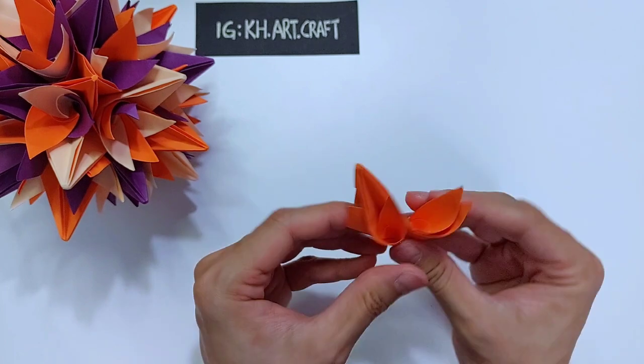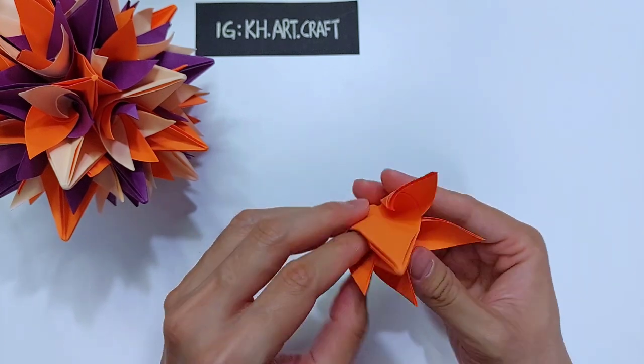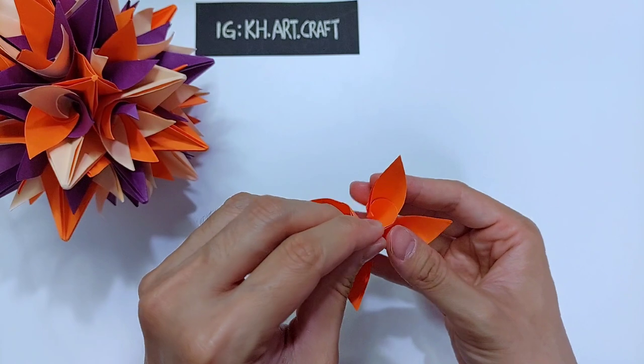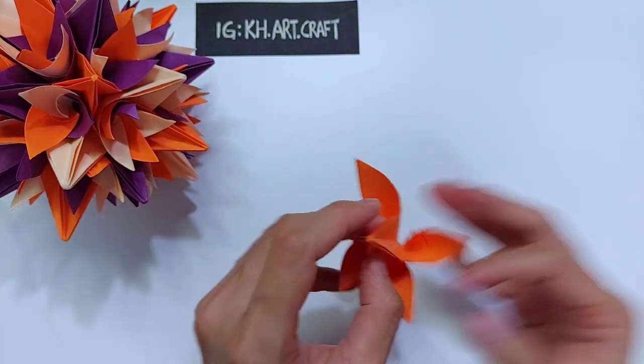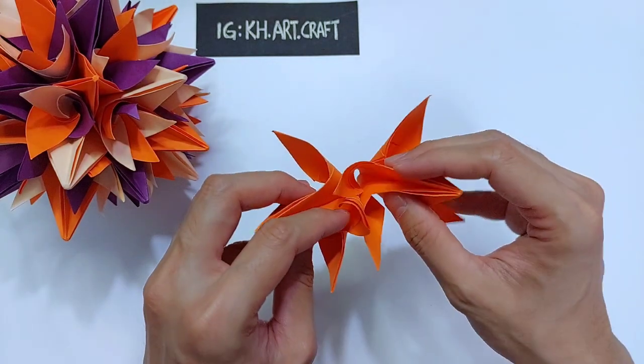Once this is done, we have one unit. Assembly will be with a regular 30 units. Just knit two together like this.